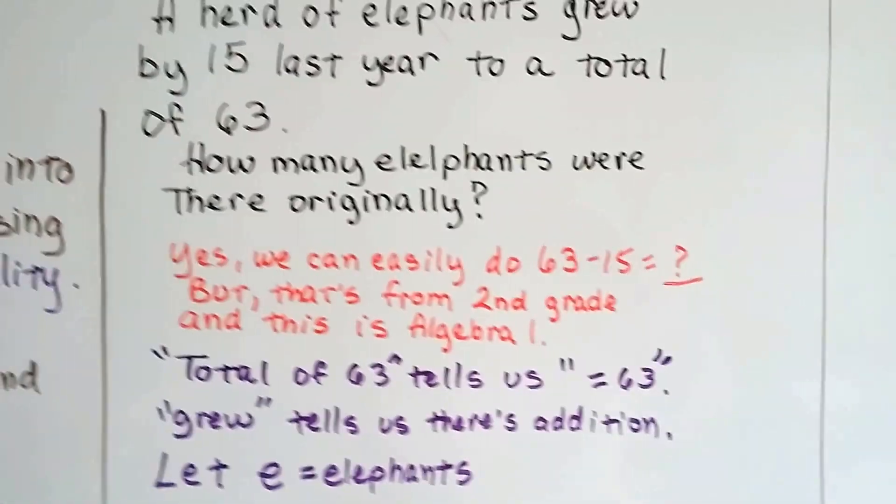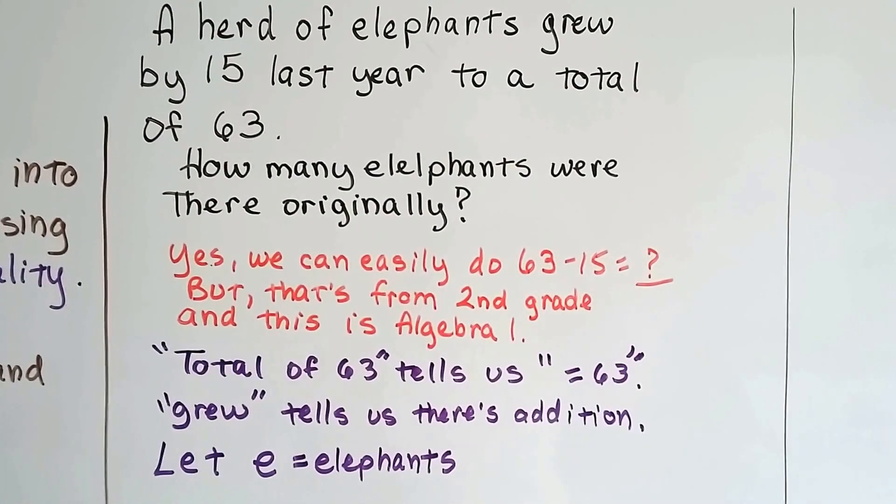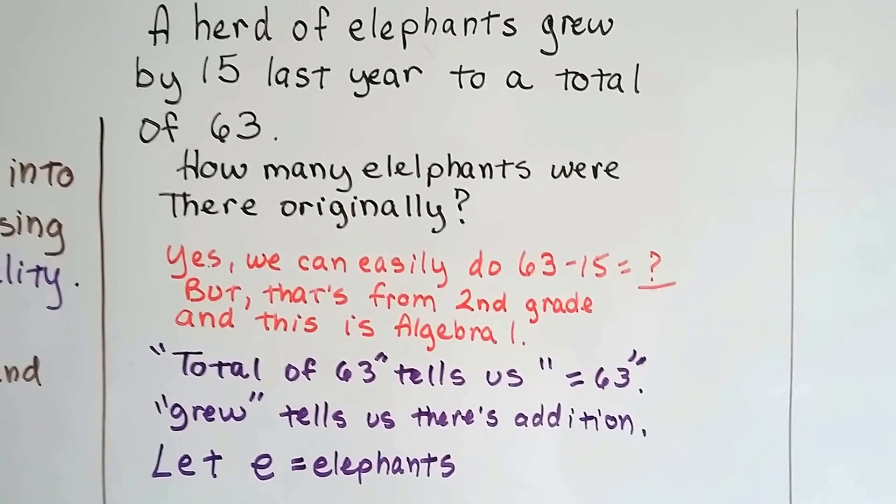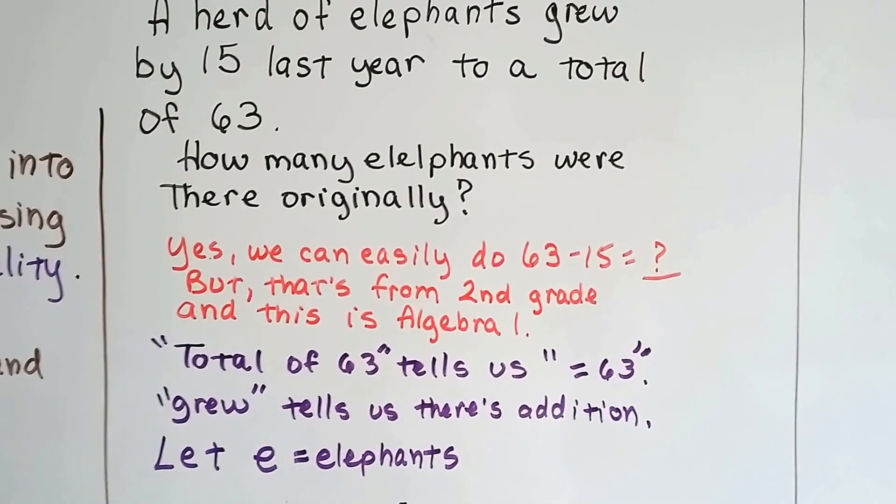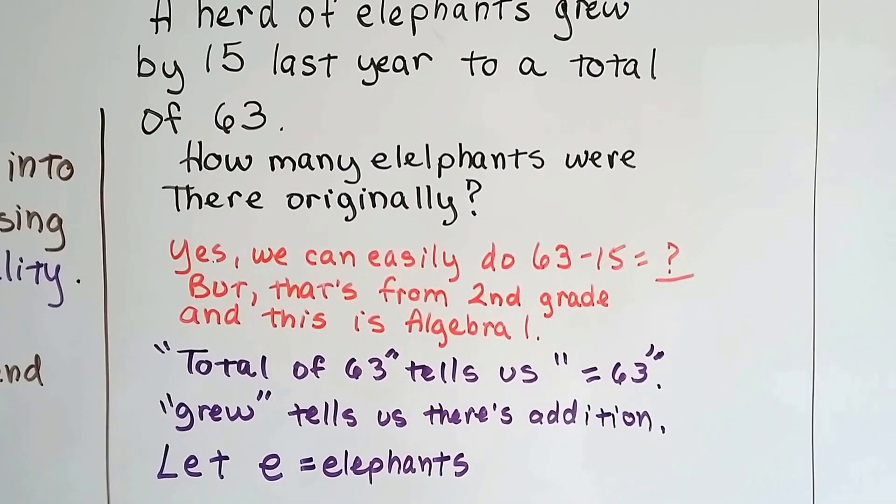So what we're going to do is we're going to look for clue words. And it says a total of 63. So that tells us it equals 63. And it says the elephant herd grew. So that tells us it's going to add. There's addition because it grew. It got bigger.